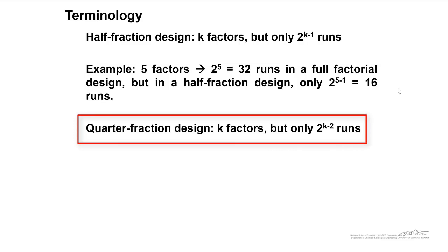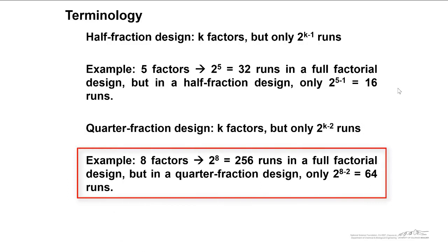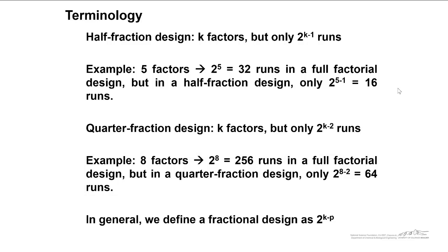A quarter fraction design, we have k factors, but only 2 to the k-2 runs. For example, if we had eight factors, there would be 256 runs in a full factorial design. But in a quarter fraction design, we would have 2 to the 8-2 equals 64 runs. In general, we define a fractional design as 2 to the k-p.